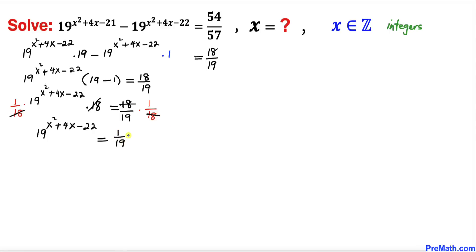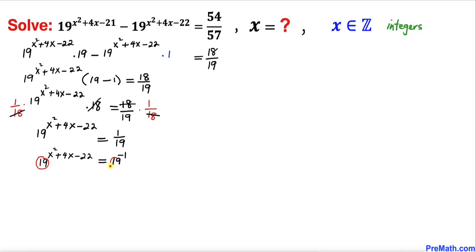On the right-hand side, 1 over 19 can be written as 19 to the power of negative 1. Now the base is 19 on both sides, so since the bases are the same we can equate the exponents. Therefore: x squared plus 4x minus 22 equals negative 1. Adding 1 to both sides, the negative 1 and positive 1 cancel on the right, giving us x squared plus 4x minus 21 equals 0.